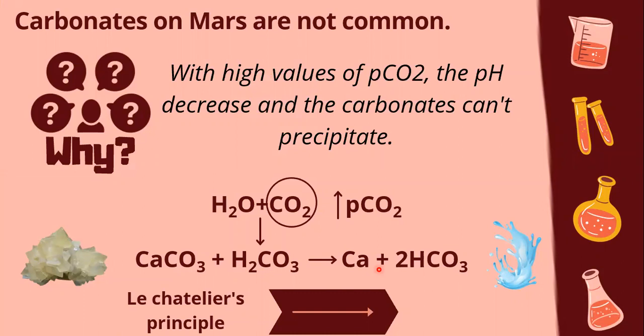Why? Well, Mars would need more greenhouse effect gases to keep the surface warm enough to have liquid water in the past. But with high values of partial pressure of CO2 in the atmosphere, the pH decreases and carbonates cannot precipitate, because this increases the amount of carbonic acid in the water. This generates a reaction disequilibrium — the reaction moves to the right — and inhibits the precipitation of carbonates because of Le Chatelier's principle.